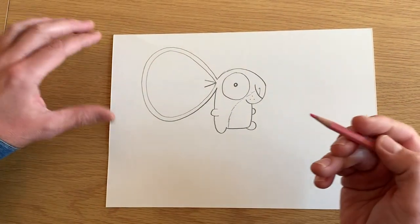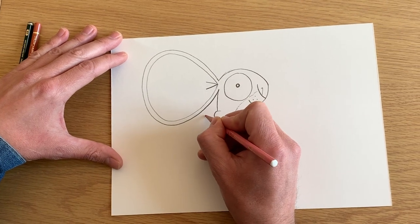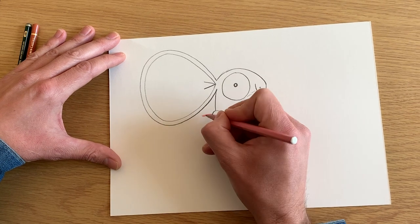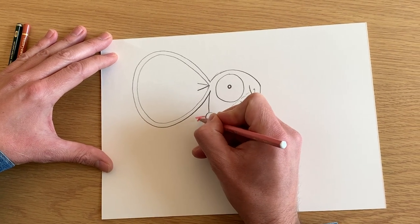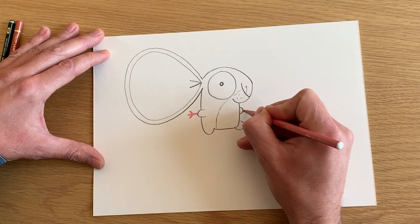And then what you want to do is get your pink pencil or your red pencil and we're going to draw the mouse's hands and his feet. So you do a line like that and then you draw two other fingers, and do the same here.